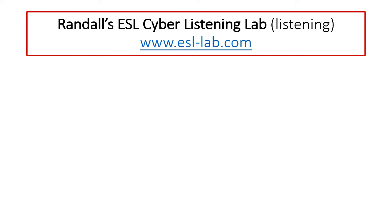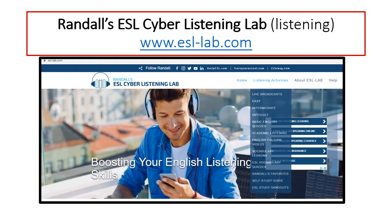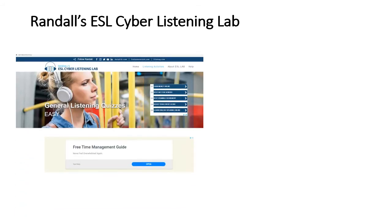Another website for listening is Randall's ESL Cyber Listening Lab. The address is www.esl-lab.com. When you type that into your browser, it takes you to this homepage. Click on Listening Activities and see a menu where you can choose Easy, Intermediate, or Difficult. Here is the Easy page. Please be careful where you click on this website — it has many advertisements or ads. Don't click on them. They will take you away from the website to a different place. Look carefully before you click.